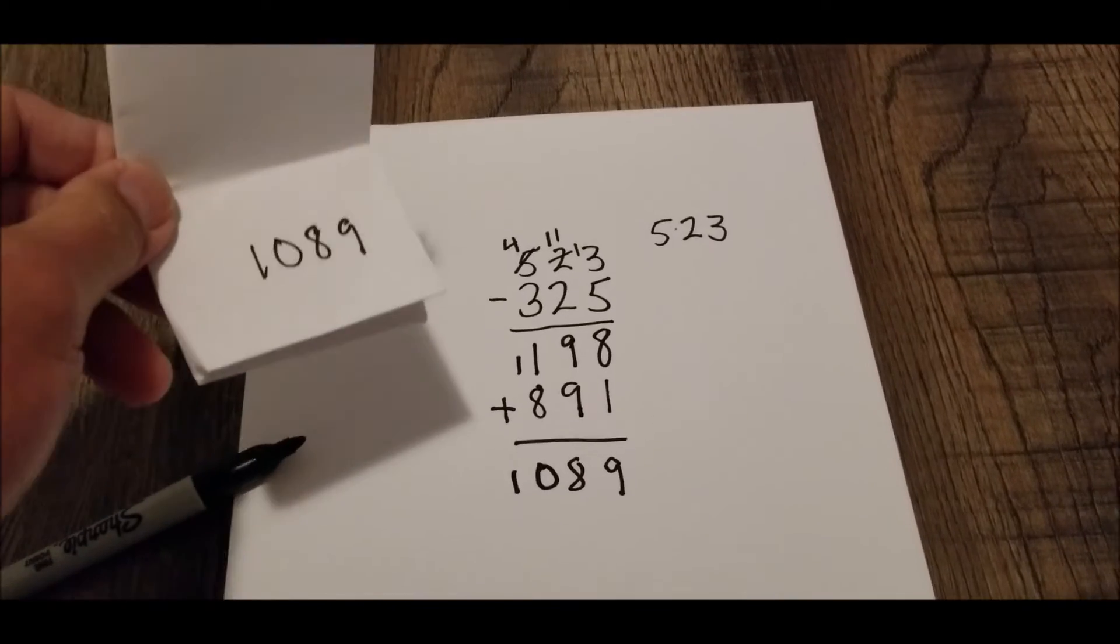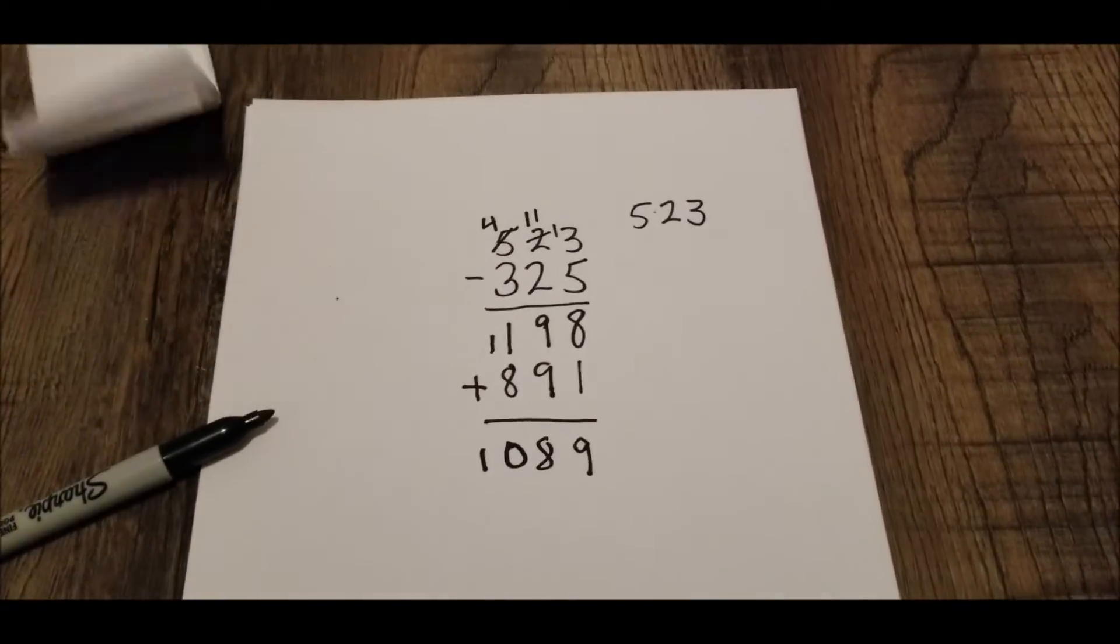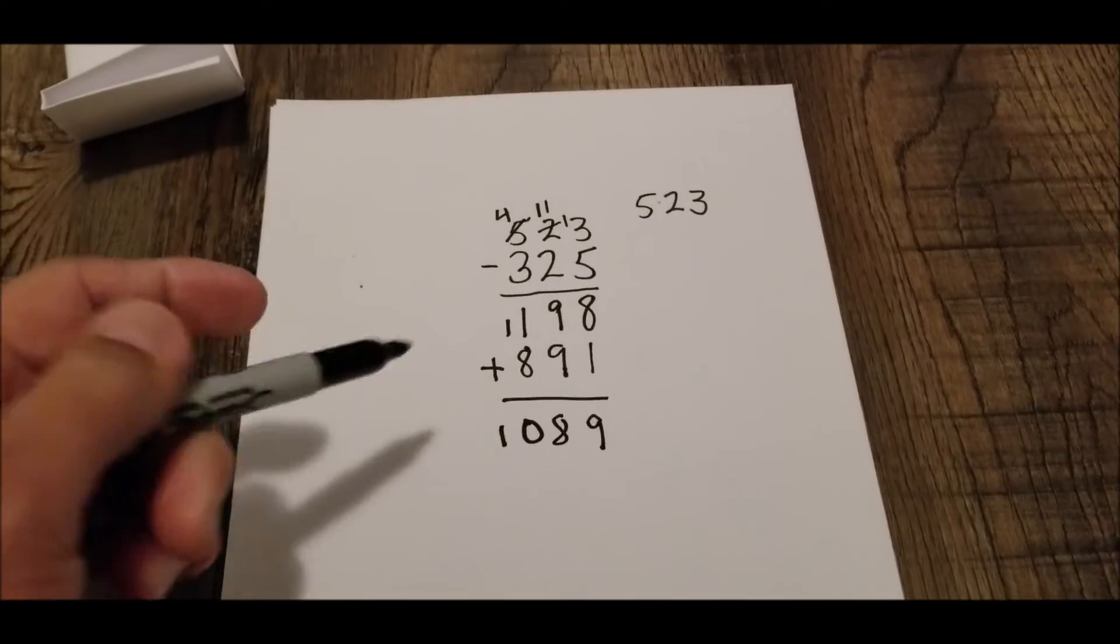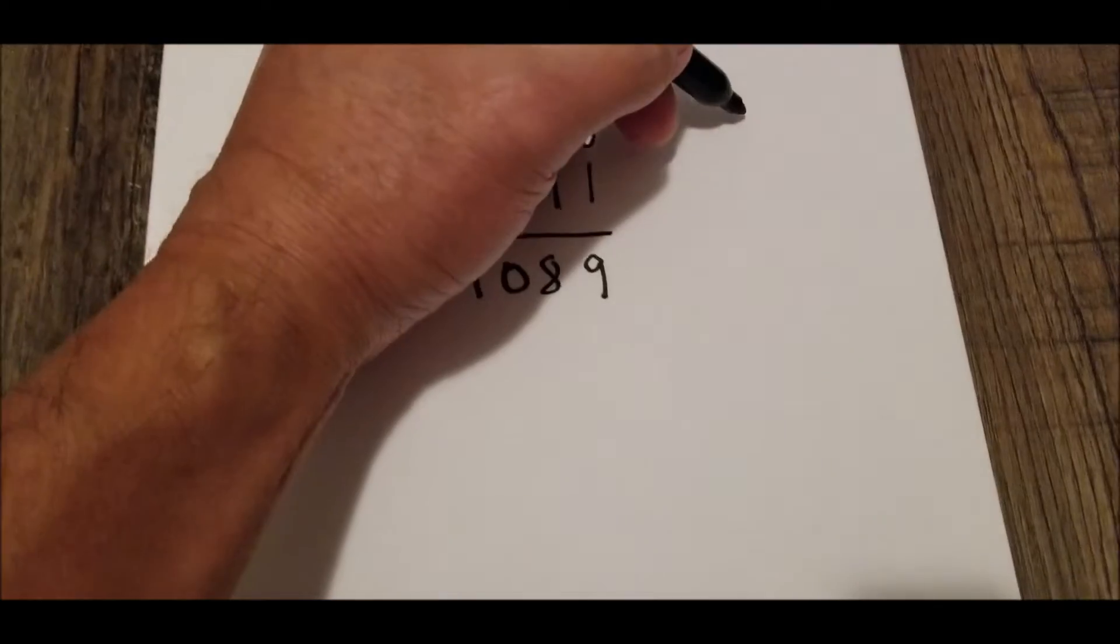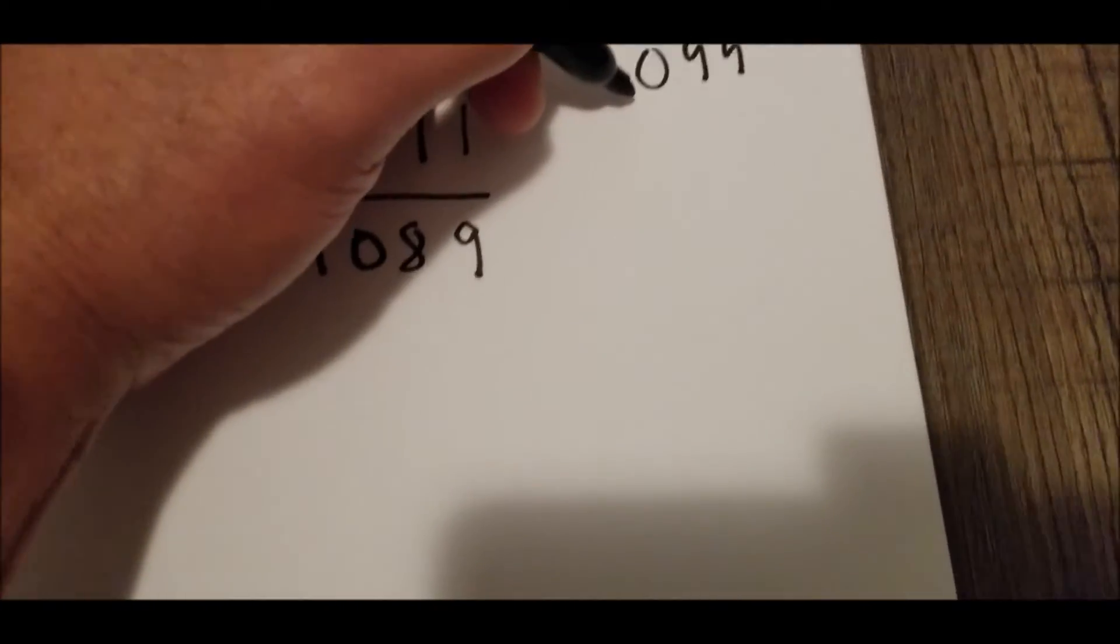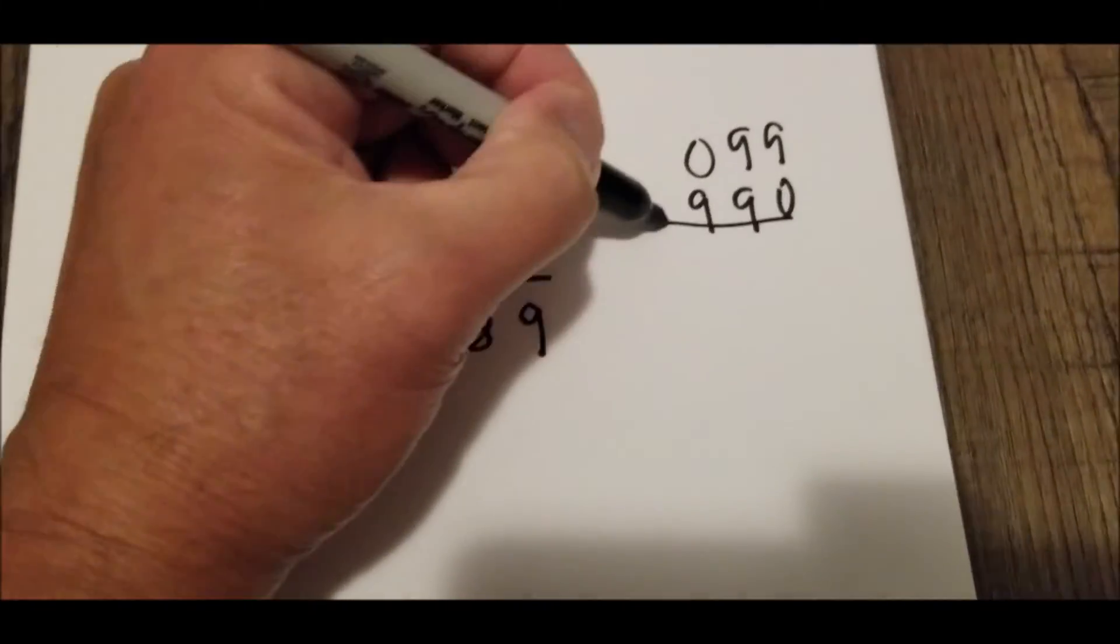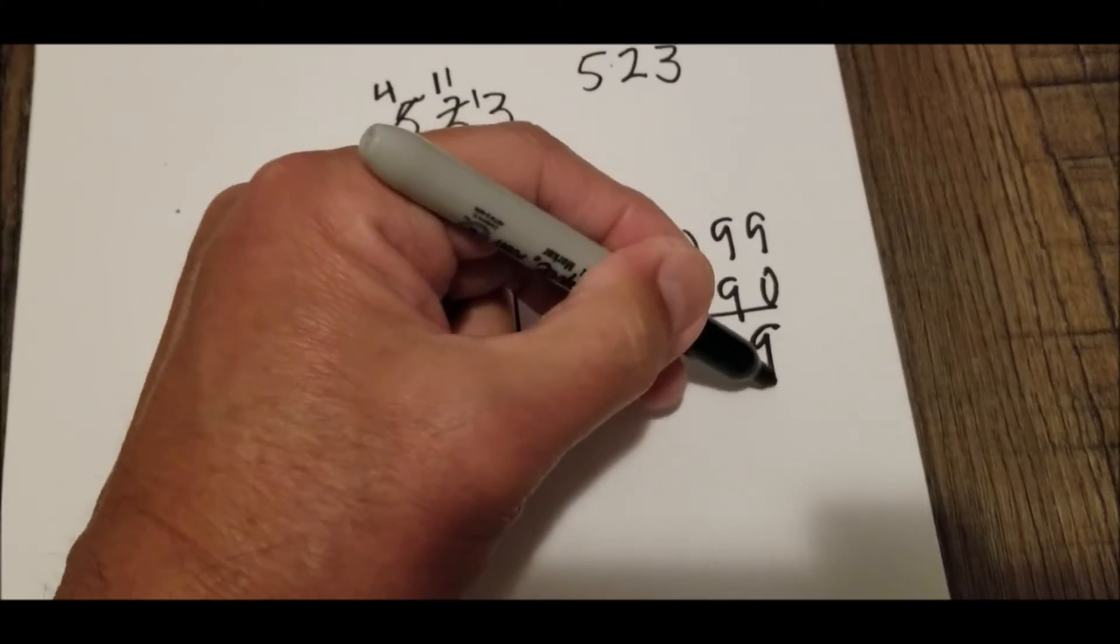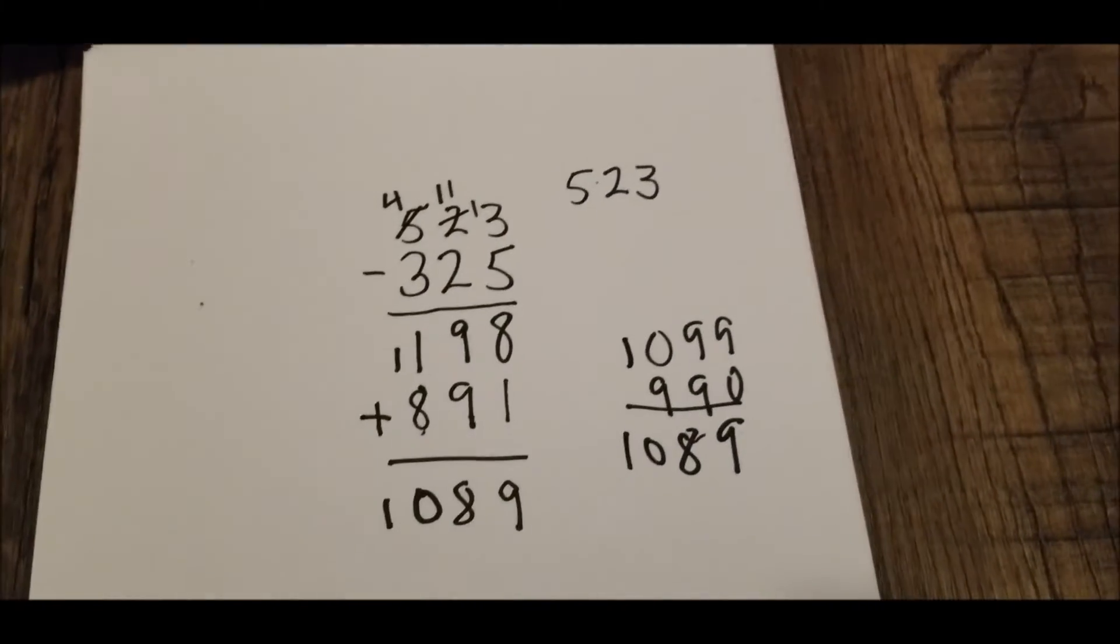Again, you have to pick a number where all the digits are different. There were cases where you get a 99 after you subtract. So if you ended up getting a 0, 9, 9, then you would just flip that to 9, 9, 0. And you would still get the 9, 8. You would still get the 1,089.